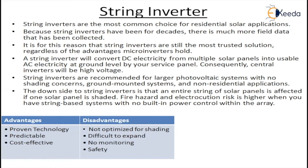The downside of the string inverter is that if one solar panel is shaded, the entire string of solar panels is affected. Fire hazard and safety risk are higher in a string-based system with no built-in power control within the array. Advantages: mature technology, predictable and cost-effective. Disadvantages: not optimized for shading, difficult to expand, no monitoring, no safety point, and fire hazards are a problem.